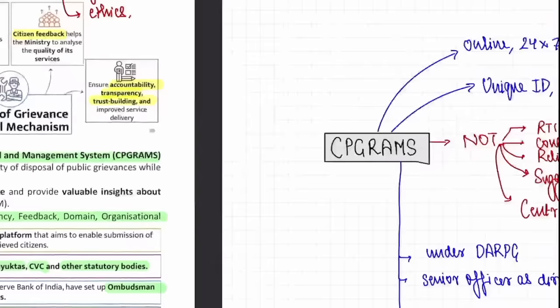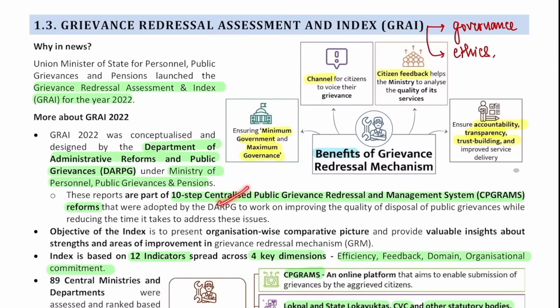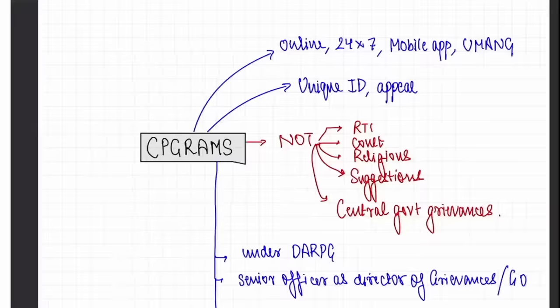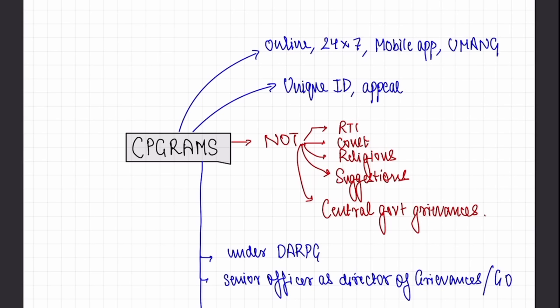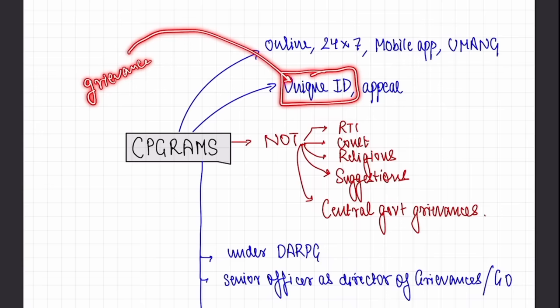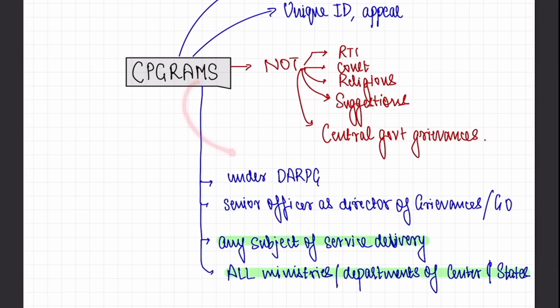CPGrams falls under the Department of Administrative Reforms and Public Grievances. A senior officer is designated as Director of Grievance or Grievance Officer in all departments. Any subject of public service delivery — this is an important prelims fact — all ministries and departments of the centre as well as the states are covered here. Another important prelims fact is what is NOT covered in the CPGrams portal: RTI is not covered, religious complaints are not covered, suggestions are not covered, and central government employee grievances regarding promotions are not covered.